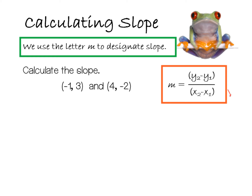Now we can also calculate slope using the formula — the change in y over the change in x, or y-sub-two minus y-sub-one over x-sub-two minus x-sub-one. Each coordinate point has an x and a y. I'll call the first point x-sub-one and y-sub-one, and the second point x-sub-two and y-sub-two. So I take y-two, which is negative two, minus my first y, which is three, over x-sub-two, which is four, minus x-sub-one, which is negative one. Watch that carefully — the subtraction is in the formula, but the x-sub-one was already negative, so keep that. In my numerator, negative two minus three is negative five. In my denominator, four minus negative one is really four plus one, which equals five. So my slope is negative one.